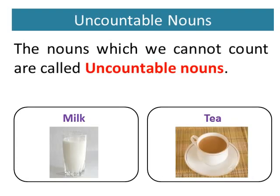The nouns which we cannot count are called uncountable nouns. For example, milk and tea. We never say one milk or one tea, so they are uncountable nouns.